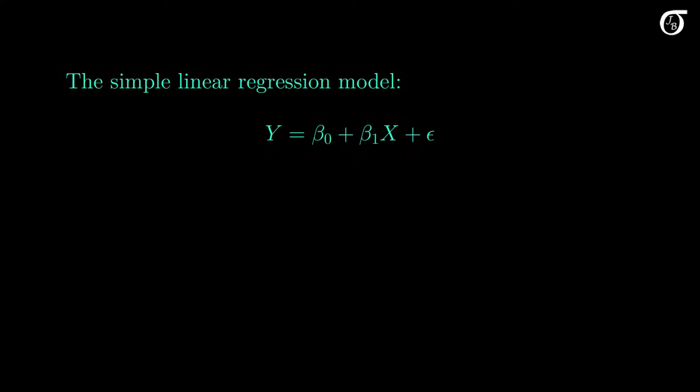To refresh our memories, here's the simple linear regression model. Beta0 and beta1 are unknown parameters, and we estimate them with the statistics beta0 hat and beta1 hat. These estimators are based on sample data.